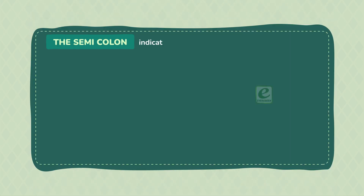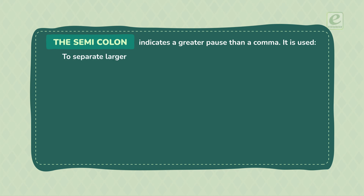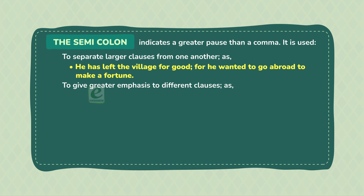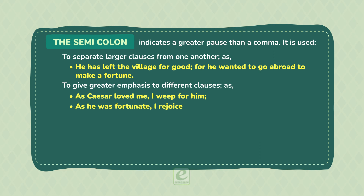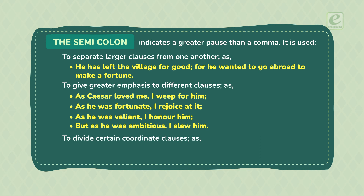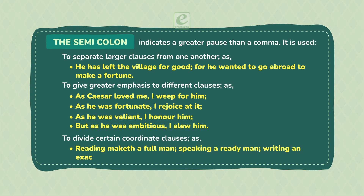The semicolon indicates a greater pause than a comma. It is used to separate larger clauses from one another, as: 'He has left the village for good, for he wanted to go abroad to make a fortune.' To give greater emphasis to different clauses, as: 'As Caesar loved me, I weep for him; as he was fortunate, I rejoice at it; as he was valiant, I honour him; but as he was ambitious, I slew him.' To divide certain coordinate clauses, as: 'Reading maketh a full man; speaking, a ready man; writing, an exact man.'